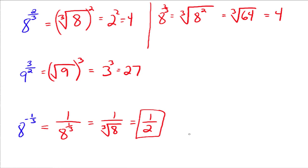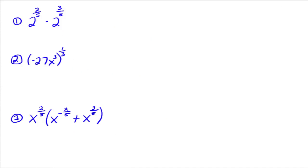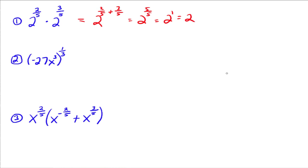We're getting the idea of how to rewrite from exponential notation into radical notation. All those properties of exponents still apply — nothing changes just because we have rational exponents. For two things multiplied with the same base, keep the base and add the exponents. So 2 to the 2 fifths times 2 to the 3 fifths gives 2 to the 5 fifths, which is 2 to the 1st, which is just 2.